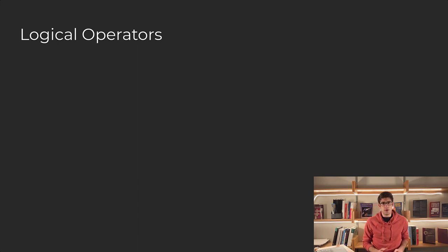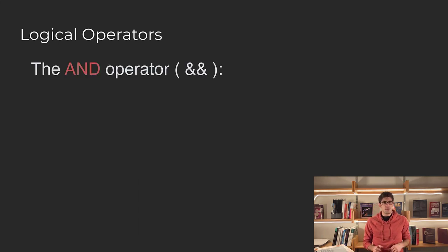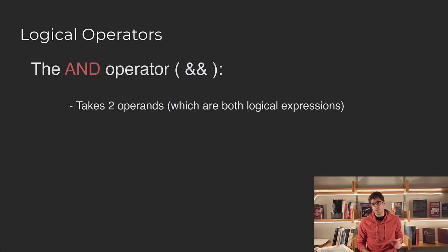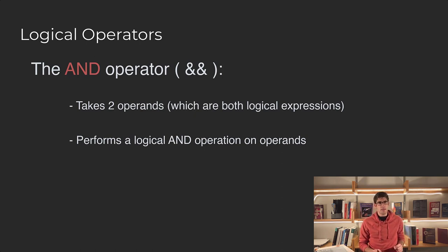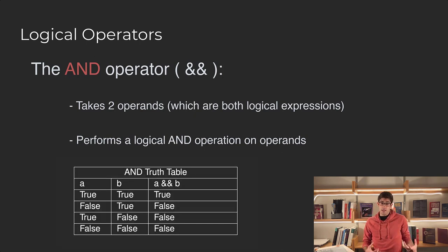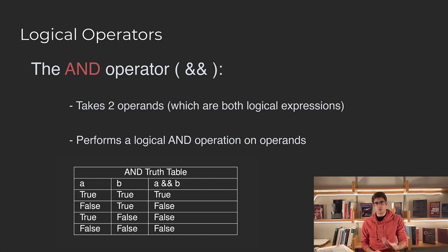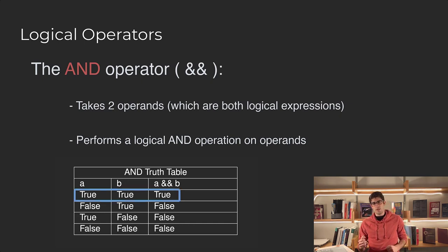Now let's talk about the AND operator. AND takes two operands, which are both logical expressions, and what it will do is perform a logical AND operation on these logical expressions. That means that a AND b — if a and b were logical expressions — would return true if and only if a was true and b was true, and would return false otherwise.